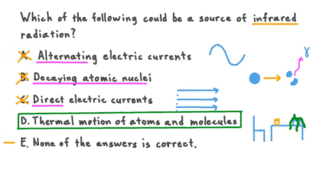Answer option D can be a source of infrared radiation. Therefore, option E, that none of the answers is correct, is itself not correct. Our final answer is that the thermal motion of atoms and molecules can be a source of infrared radiation.